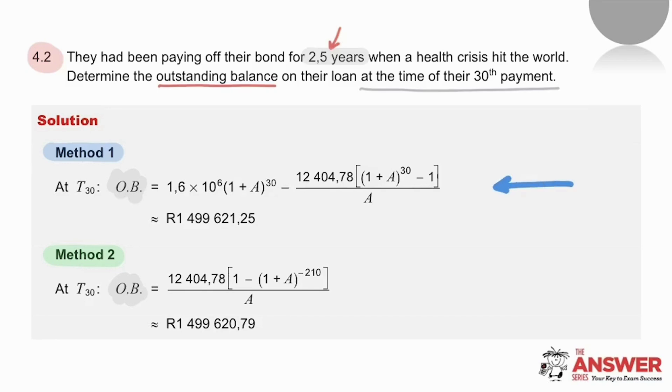Here the future value option, we take the loan amount and compound it forward 30 times and subtract from that the future value annuity of the 30 payments. Or the present value option making use of the fact that 240 payments were the total number of payments expected and so this means that 210 payments were still to be made. Remember there will be a slight difference between the decimal places and the answers because of using the rounded off value for the monthly payments.